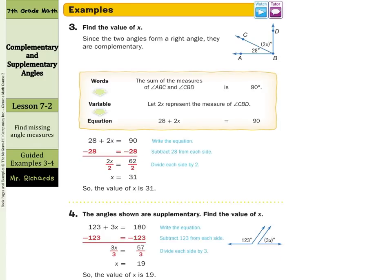Now, we can also use that to help us define the value of x. In example 3, since two angles form a right angle, they are complementary. So we can say that this angle here, the CBD, which is labeled as 2x, and the ABC, which is labeled as 28, we can say 2x plus 28 equals 90 degrees. And we can set up an equation 28 plus 2x equals 90 degrees and solve for x. You can see how they solved to get 31.